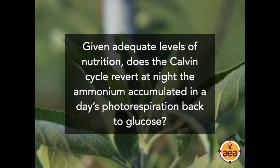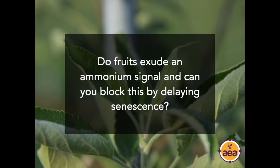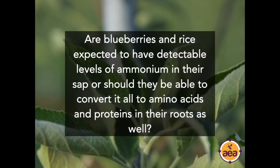Question from Charles Bergeron: given adequate nutrition, does the Calvin cycle at night revert the ammonium accumulated during the day's photorespiration back to glucose or sugars? Yes — my understanding is that ammonium accumulates during the day from protein catabolism in the high-temperature environment, and at night when the plant is cooler, if it has the right nutrition, it will convert that ammonium back. Follow-up question: do fruits exude an ammonium signal, and can you block this by delaying senescence? They should not be transmitting an ammonium or infrared signal — you should not have a problem with ammonium coming from fruit unless you have more significant plant nutrition problems.